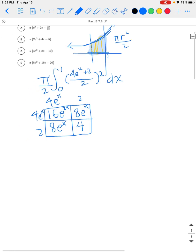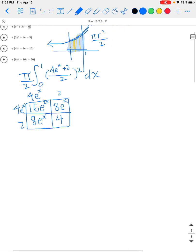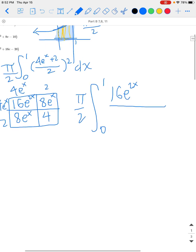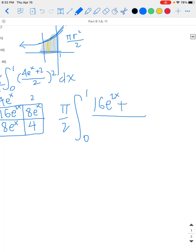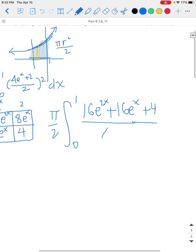We have π/2 times the integral from 0 to 1 of, and then in the numerator we have 16e^(2x) + 16e^x + 4. And in the denominator you have 2^2, which is just 4.